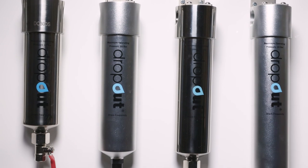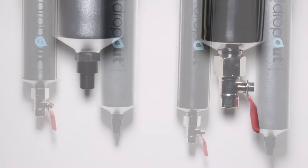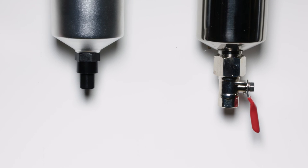The Dropout range comes in stainless steel manual drain and aluminium, with a choice of manual or integrated auto-drain.